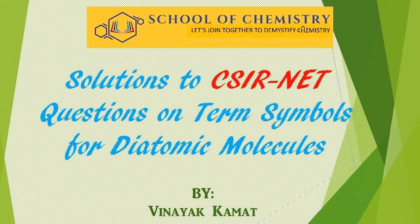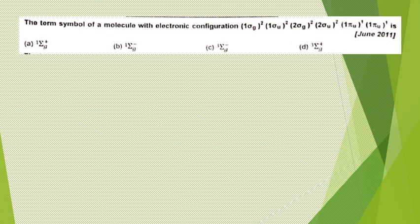Let us begin with the first question. If you look at the electronic configuration written here, they have written it in a slightly different way. This is the electronic configuration of B2 molecule. This is σ1s², σ*1s². In the conventional method we write σ*1s², then σ2s², σ*2s². For the B2 molecule, the π molecular orbitals come down, so it will be πu¹ and πu¹.